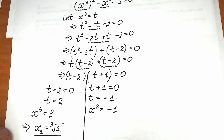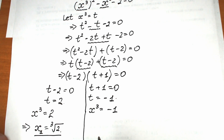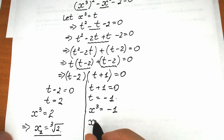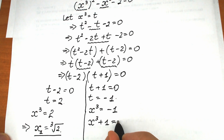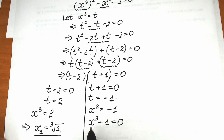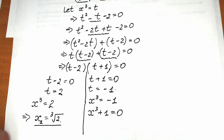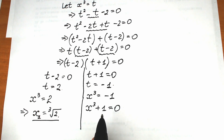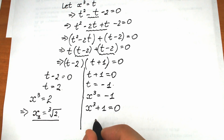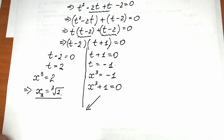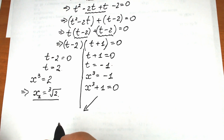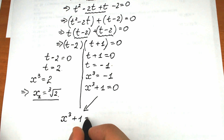From x cubed equals 2, applying the cube root on both sides gives x₁ equals the cube root of 2. For x cubed equals minus 1, we can find one root: x equals minus 1. But we want all the roots. Let's bring minus 1 to the left side: x cubed plus 1 equals 0.